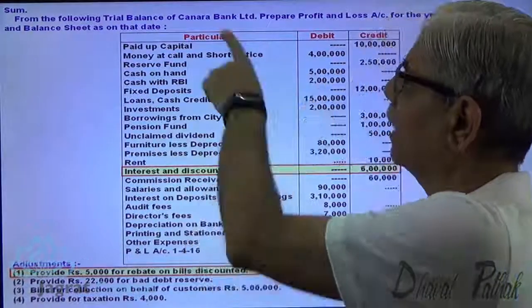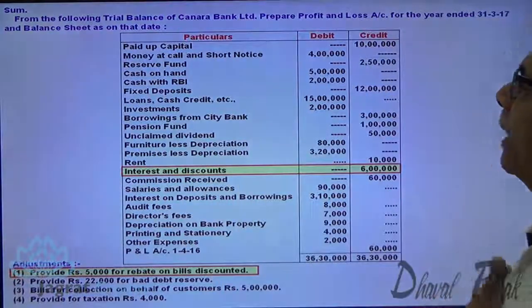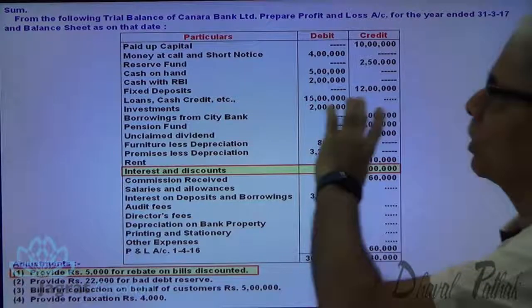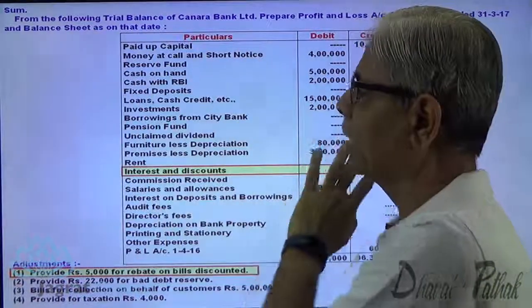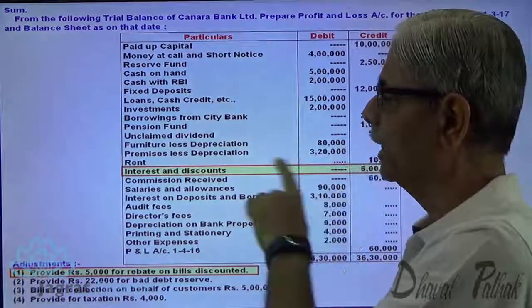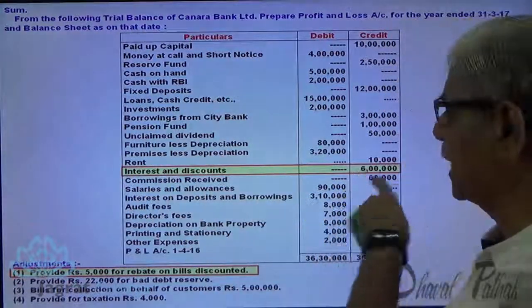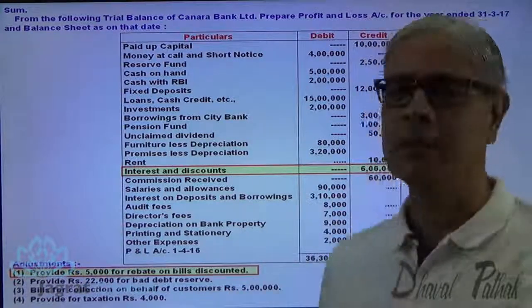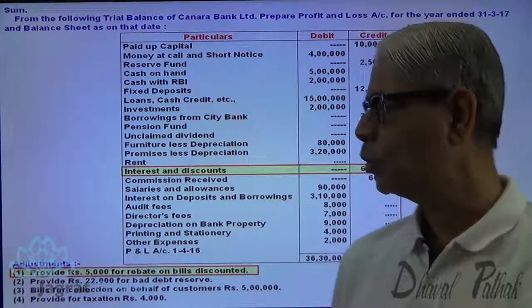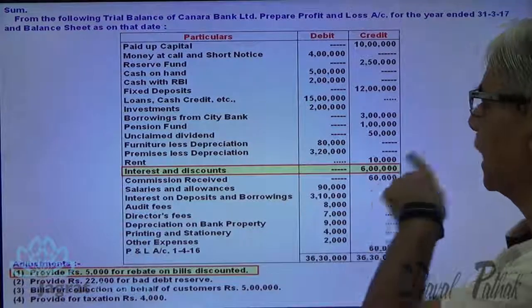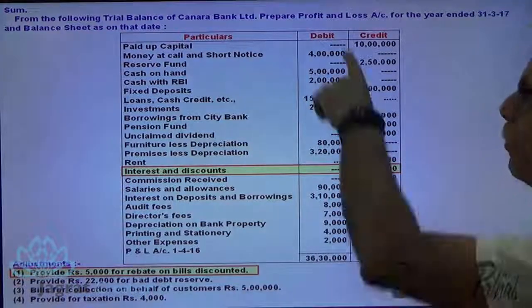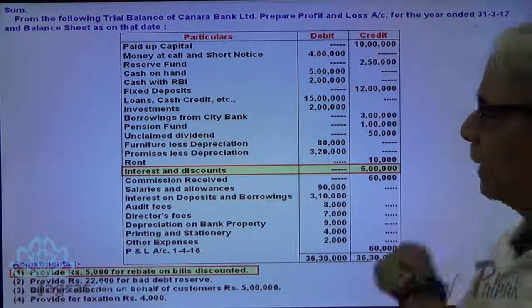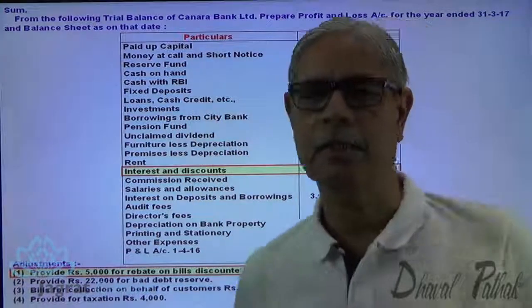From the following trial balance of Canara Bank Limited, prepare a profit and loss account for the year ended 31st April 2017 and balance sheet as on that date. Interest and discount 6 lakhs — provide for 5,000 rebate on bills discounted. This is an adjustment. Here you are given the debit balances, credit balances, and the adjustments.